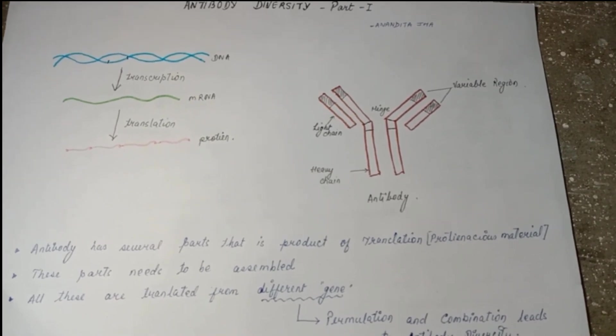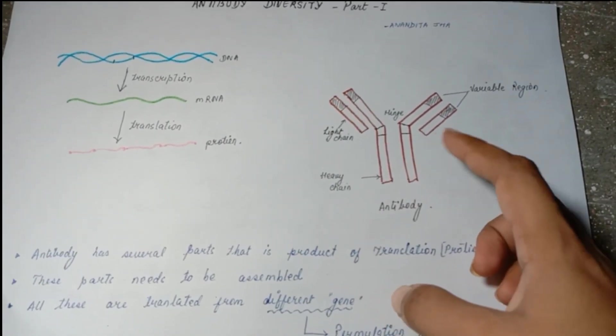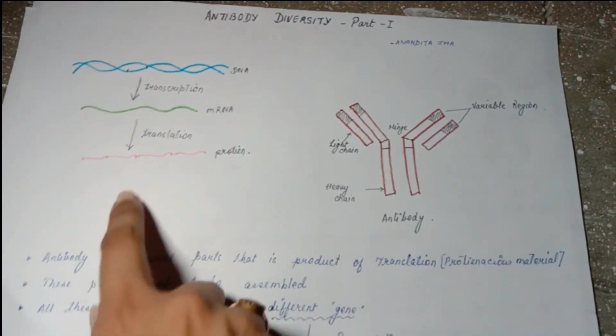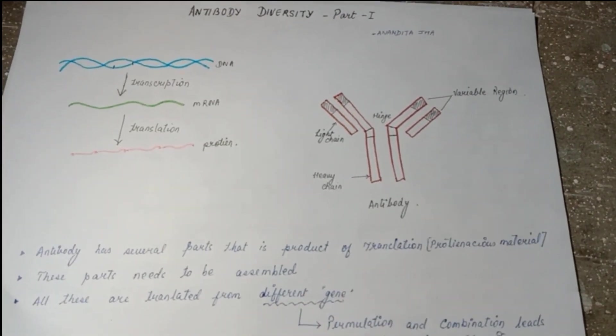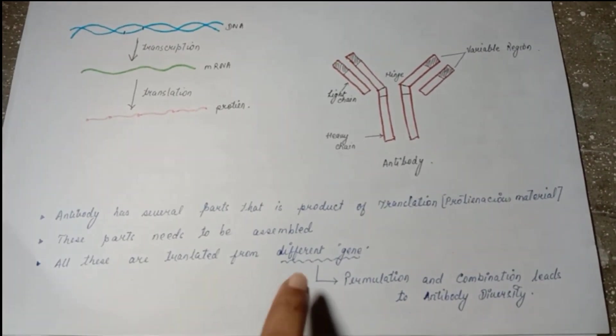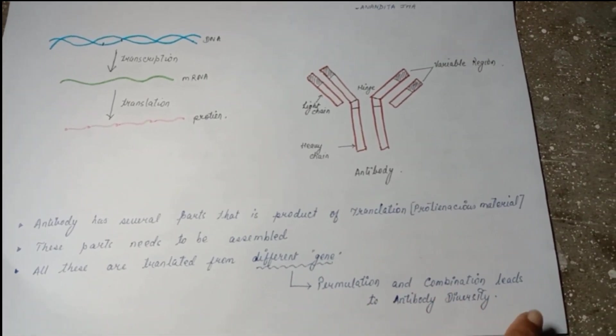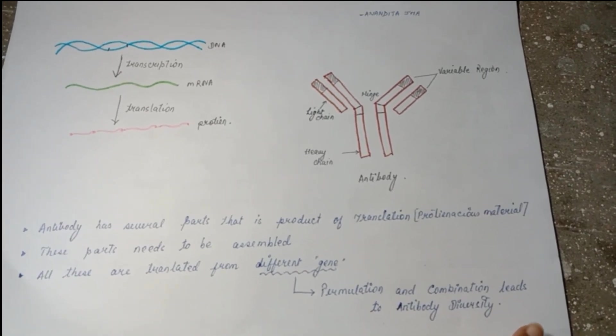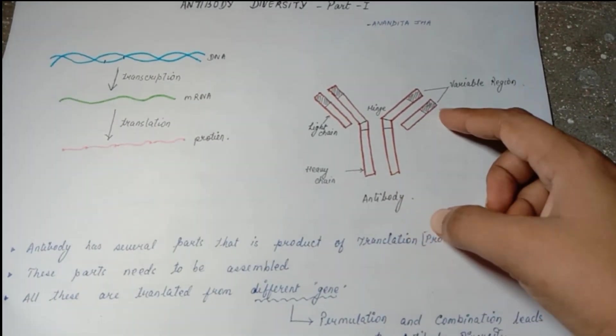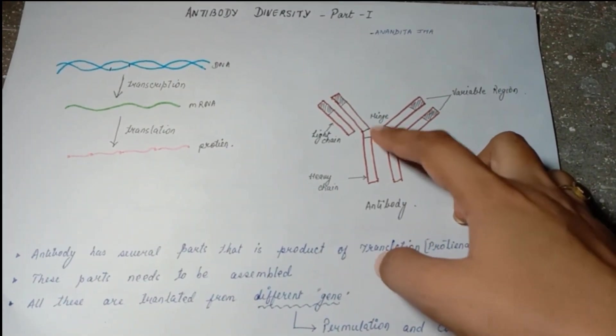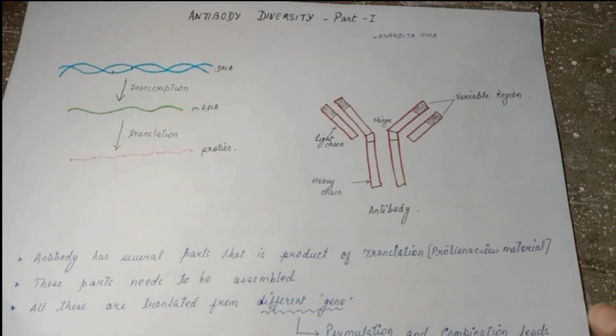We have several parts, like heavy chain and light chain. They are the product of translation, meaning mRNA that is changed to protein as they are proteinaceous. It's not that this whole part is transcribed or translated from a single mRNA. There are segments, these parts. These segments need to be assembled and are translated from different genes.